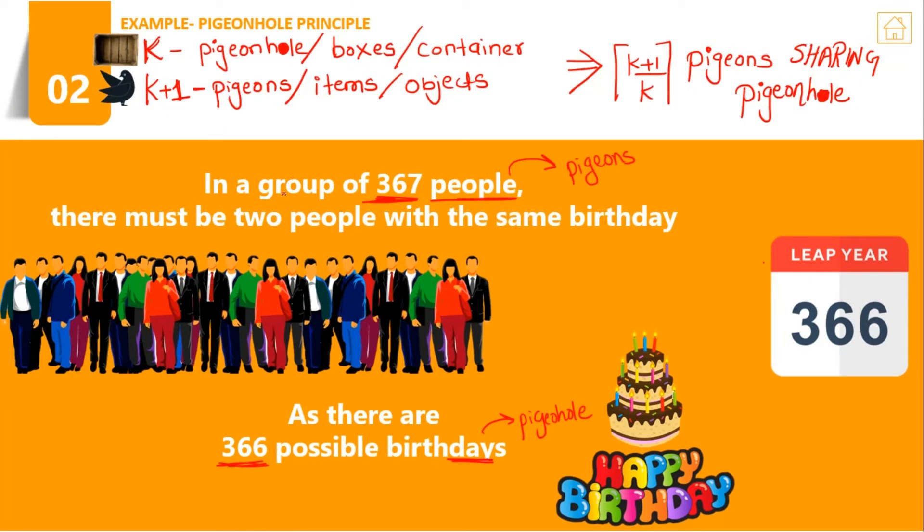For example, in a group of 367 people there must be 2 people with the same birthday. Why is this? Because for a leap year we have 366 days, and in a normal year we have 365 days. So if there are only 366 days in your whole year and you have a group of 367 people, one must be sharing his birthday with another.